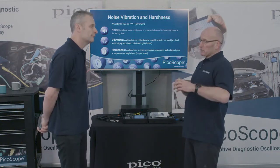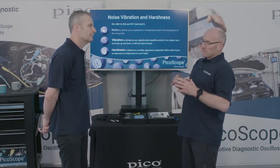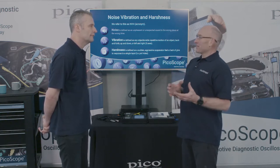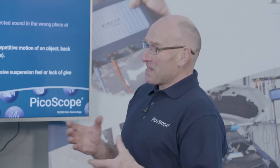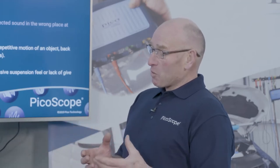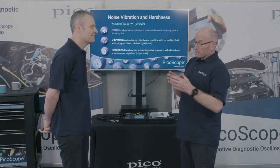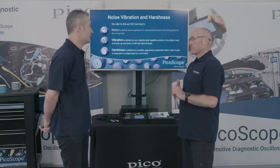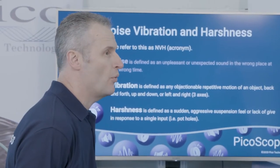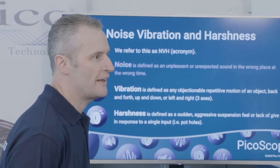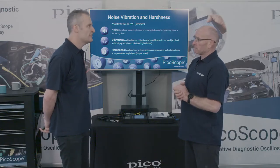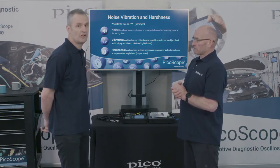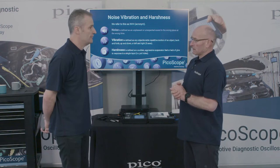The motor vehicle is essentially a series of mechanical components constantly in conflict with each other — things that rotate and things that reciprocate are never going to be harmonious. We have to understand the difference between what is normal and correct and what is a fault. NVH allows us to do that, because it's very easy to convince yourself there is a problem when in fact it's a characteristic of the vehicle. Being able to conclusively measure and compare against a known good vehicle is incredibly powerful.